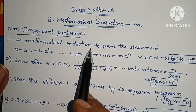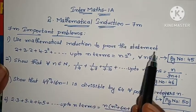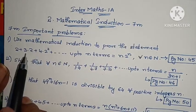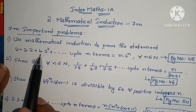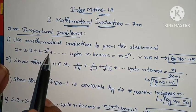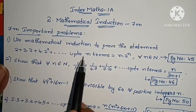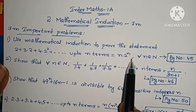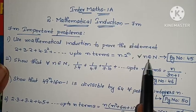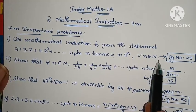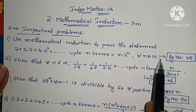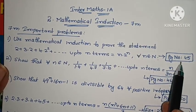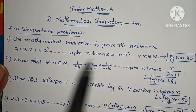Use Mathematical Induction to prove the statement: 2 plus 3 into 2 plus 4 into 2 squared plus up to n terms equals n into 2, for all n belonging to the set of natural numbers N. This is from page number 45.